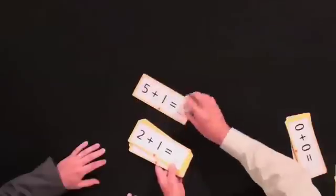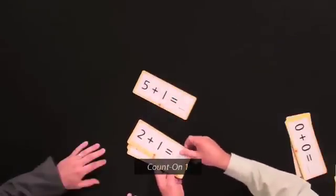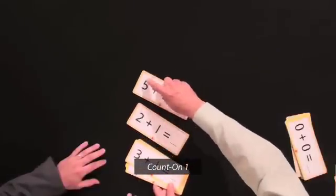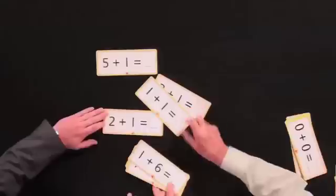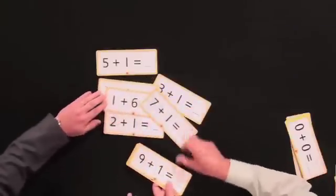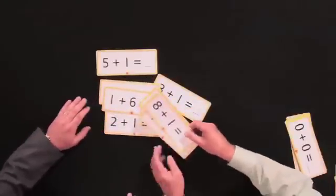And one way might be to show you the separate cards that we used for those so you can see what those sub-clusters are. So the cards that show the count on one facts are anything where you're adding a one. So we have a number there, one addend, the other addend is one. And so we have a whole set of those cards that show the count on one and that's one of the sub-clusters.